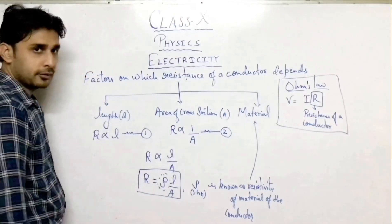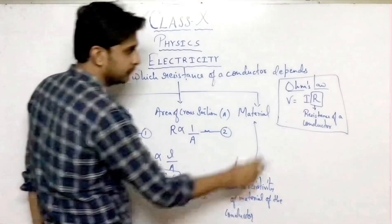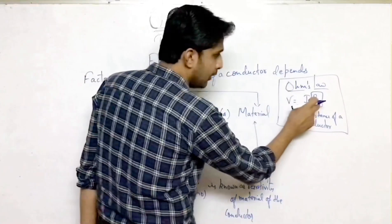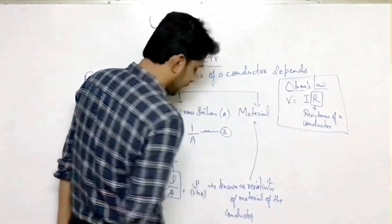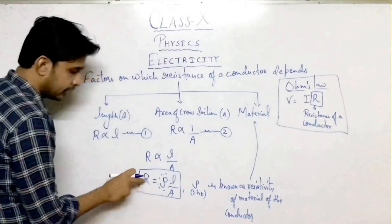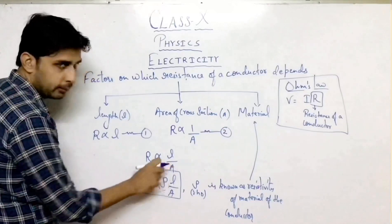So we have learnt two formulas for resistance: one from Ohm's law, R = V/I, and another is R = ρL/A.